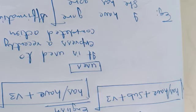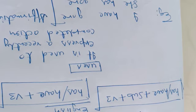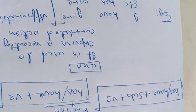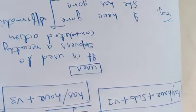'Maine raat mein khana khaya tha' — that was not recently done, it was done at night, so that is past. But any action which we consider to have been recently completed — there we use present perfect. Simple.